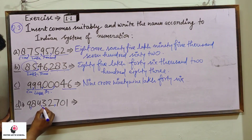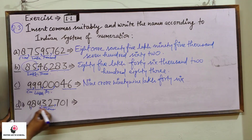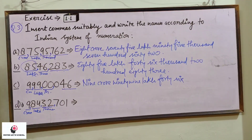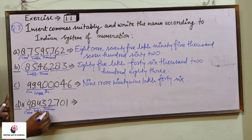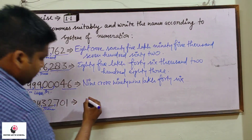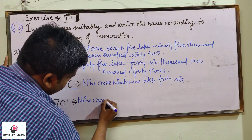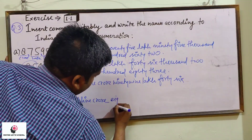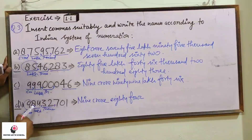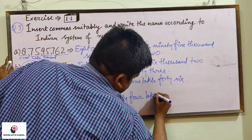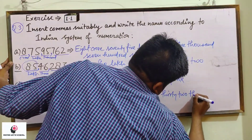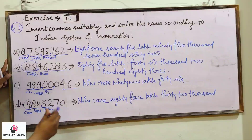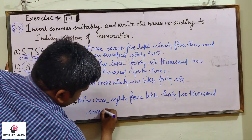Try to do it. Ones, hundreds, thousands, ten thousands — so this is thousands — lakh, ten lakh — this is lakh — and this is crore. Now read with me: 9 crore, 84 lakh, 32,000, and the last one is 701. So: 9 crore, 84 lakh, 32,000, and 701.